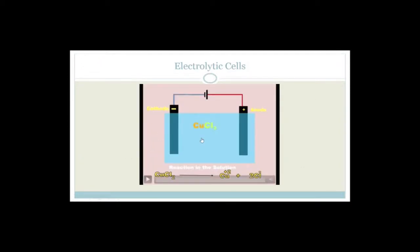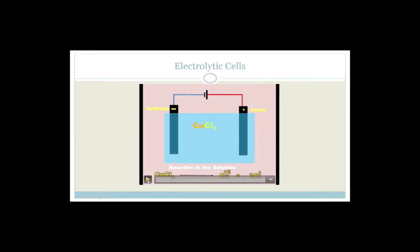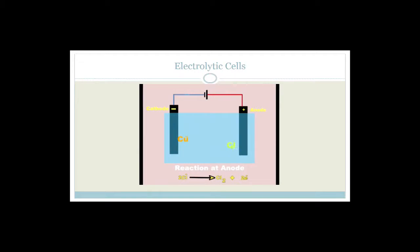Let's talk about the electrolytic cell. I've got a little video - I'm going to play it through first, then go through it again with you slowly. So what is happening here is this is a copper chloride solution, CuCl₂. Now if you look at this battery, you can see it has a long side and a short side.